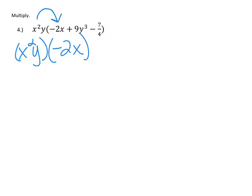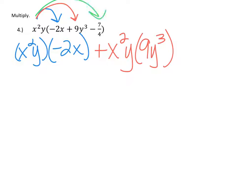Plus x²y times 9y³, and then minus x²y—that minus came from the minus with the 7/4—times 7/4. Let's continue.